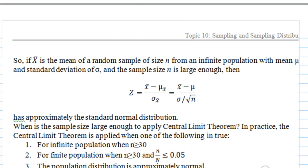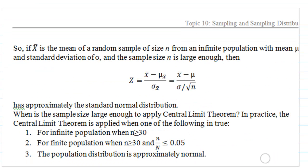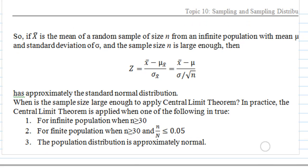First, let's recall sampling distribution and central limit theorem. It says that if x bar is the mean of a random sample of size n from an infinite population with mean mu and standard deviation sigma and the sample size n is large enough, then z equal to x bar minus mu over sigma over square root n has approximately the standard normal distribution.